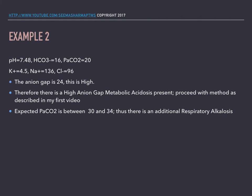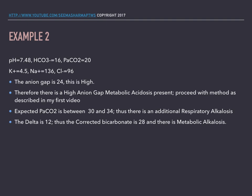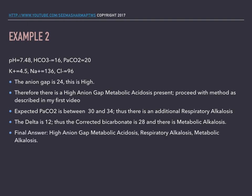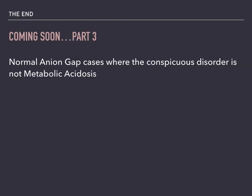Thus there is an additional respiratory alkalosis. The Delta is 12, and thus the corrected bicarbonate is 28, and there is a metabolic alkalosis. The final answer is: high anion gap metabolic acidosis, respiratory alkalosis, and metabolic alkalosis.